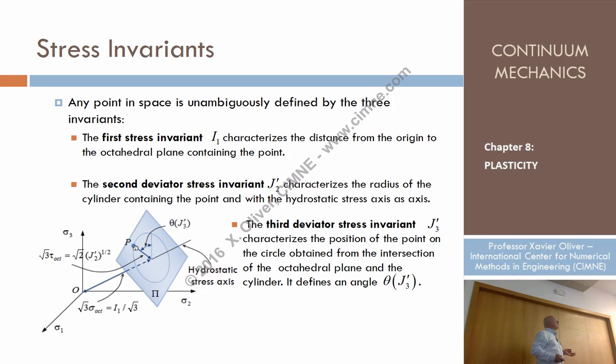And then, what can we say? What is the third invariant J'3 saying? Well, what point of this circle are we talking about? So in other words, we can say that the first invariant I1 defines the position of the octahedral plane.